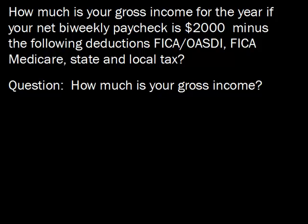Our other problem for today reads: how much is your gross income for the year if your net bi-weekly paycheck is $2,000, minus the following deductions — FICA OASDI, FICA Medicare, and state and local tax? The question is: find your gross income. In the last problem we had our gross income and found our net pay. In this problem we know the net pay and the taxes taken out, so we just need to work backwards to find the gross income.